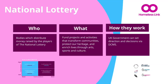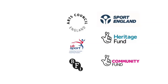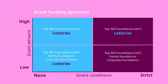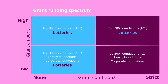Next, we will look at national lottery distributors. There are six bodies which distribute money raised by players of the national lottery, operating in England. They fund projects and activities that transform communities, protect heritage, and enrich lives through arts, sports and culture. The UK government oversaw the establishment of these bodies and monitors them. Don't discount them all — Arts Council distributed the Thriving Communities Fund in 2021 for social prescribing activities, and Sport England distributes funds to organisations tackling inequalities in health through activity. Lotteries may give funding in most parts of the grant funding spectrum, but are less likely to have strict conditions for small amounts and have grants specifically for smaller charities, which are more accessible.